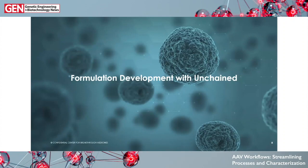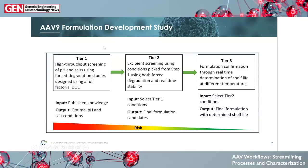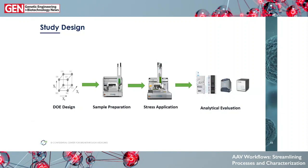Thank you, Tatiana. I'm excited to talk about some of the formulation development activities we do here at CBM using our Unchained Labs equipment. For an example, I'll talk about AAV9 formulation development, using a tiered approach. Tier one uses high-throughput screening with pH and salts using forced degradation studies, with a full factorial DOE because we're focused on just pH and salts as a base case. From there, we move to tier two for excipient screening, building upon what we learn in tier one. Finally, tier three takes all leads to determine real-time stability and shelf life.